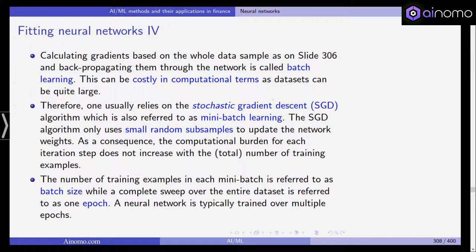Therefore, what one does is one usually relies on the so-called stochastic gradient descent or SGD algorithm, which is also referred to sometimes as mini batch learning. What you do is you select small random subsamples. You concentrate on randomly selected smaller subsample to update the network weights. And as a consequence, the computational burden for each iteration, this is an iterative procedure, it does not increase with the total number of training examples because you keep the size of those random subsamples fixed. And you can increase the training data, but the mini batches will remain of the same size.